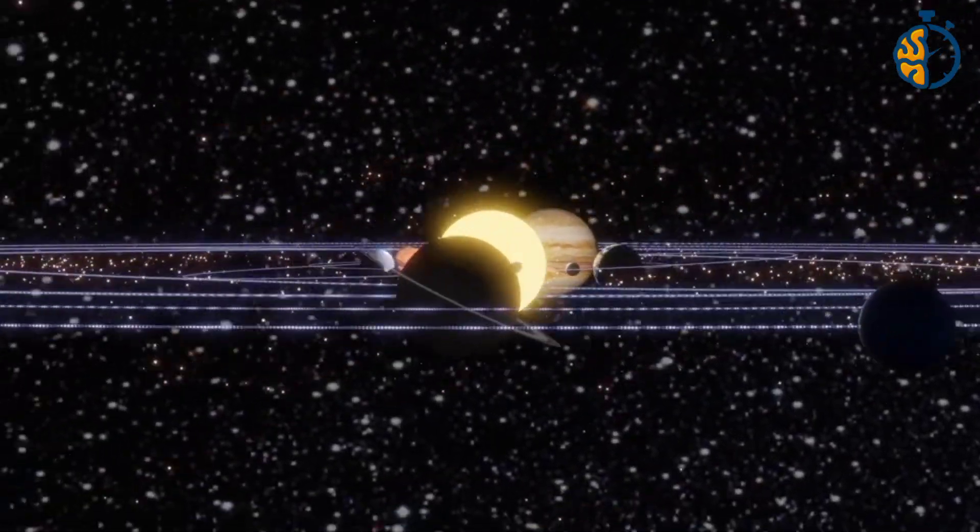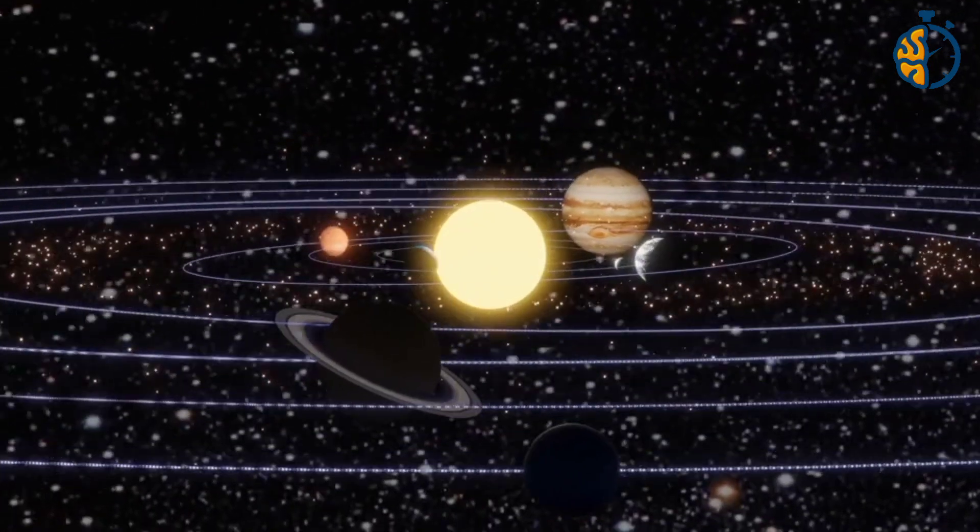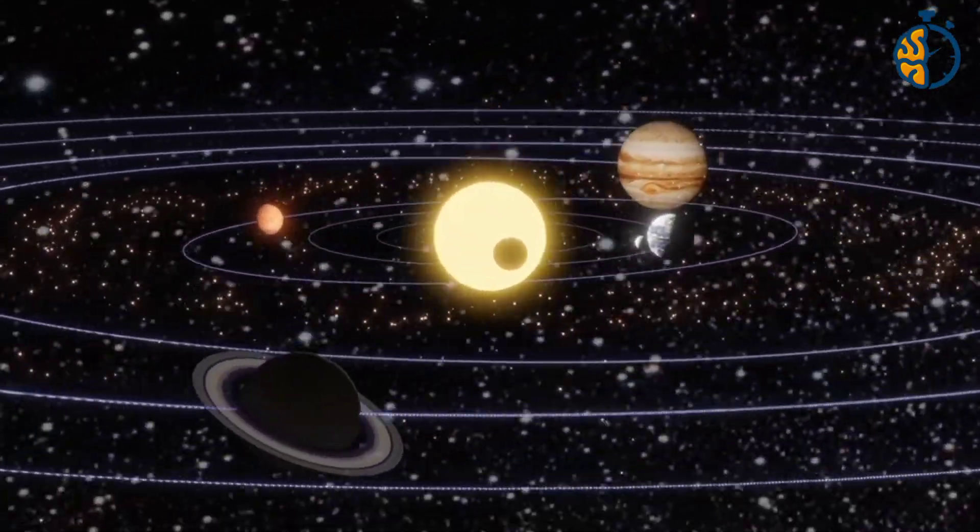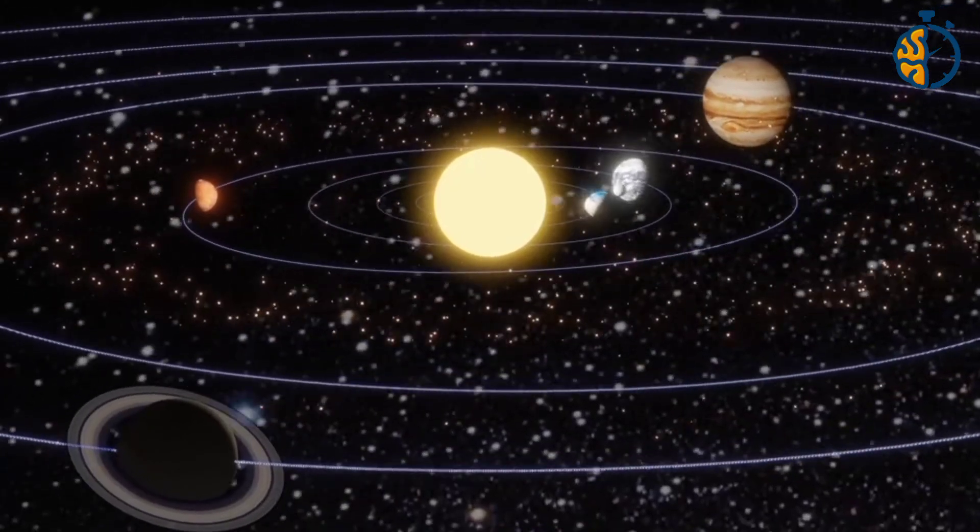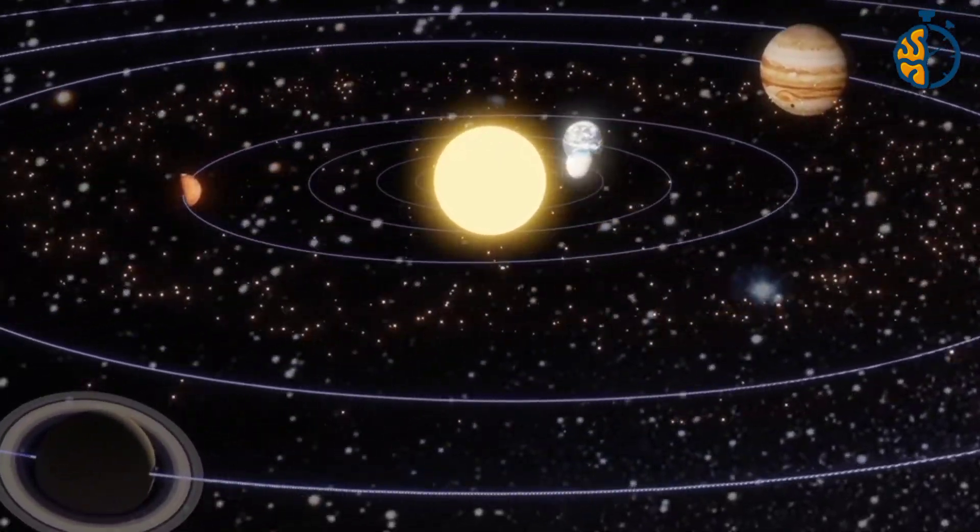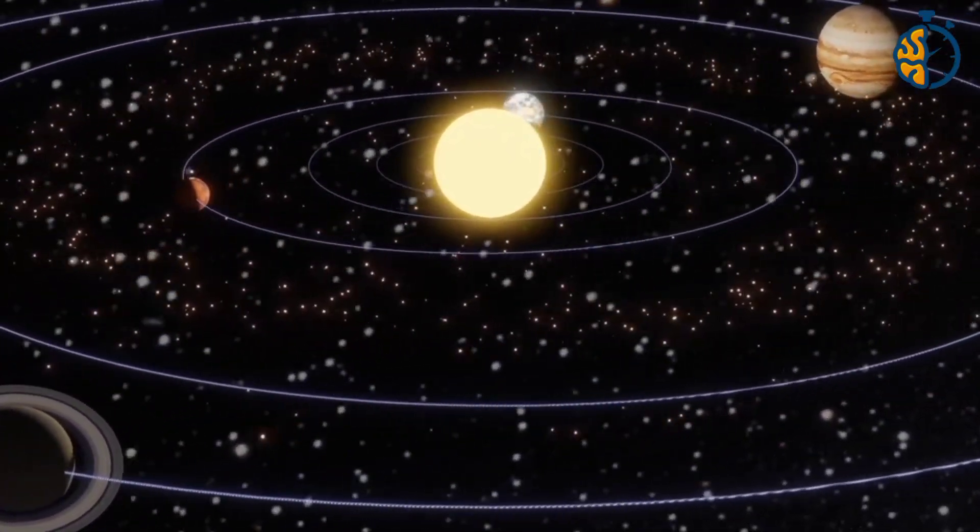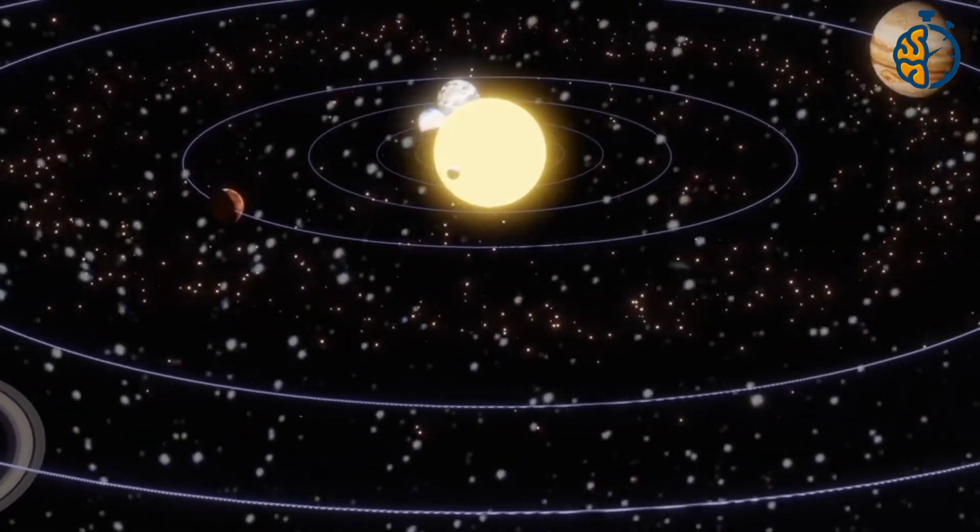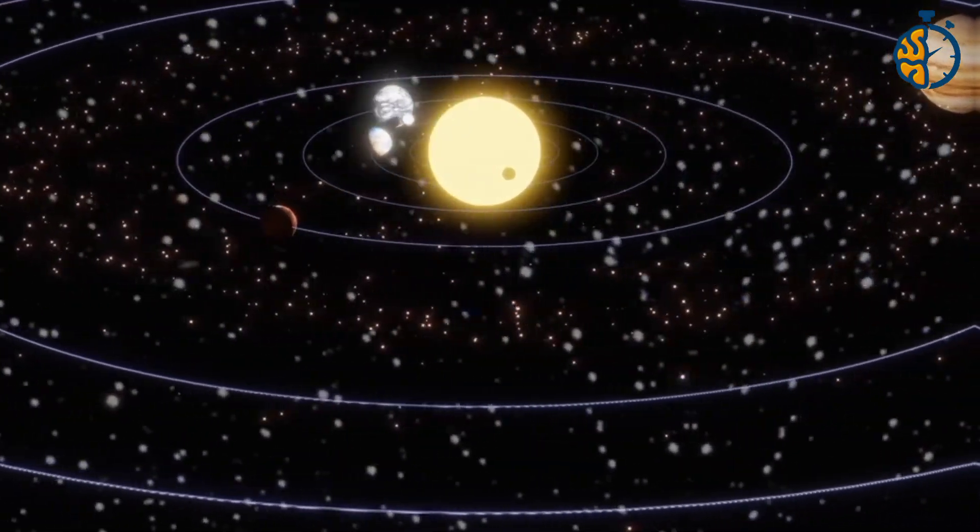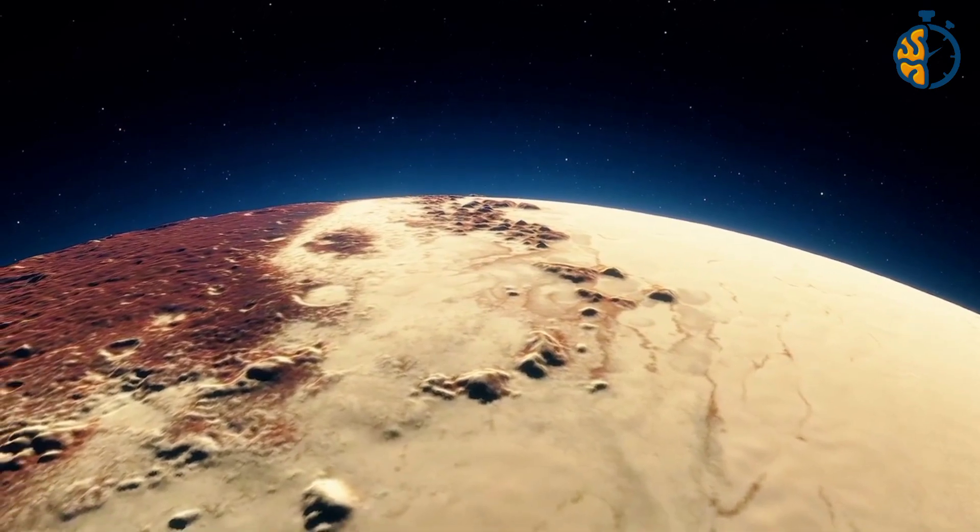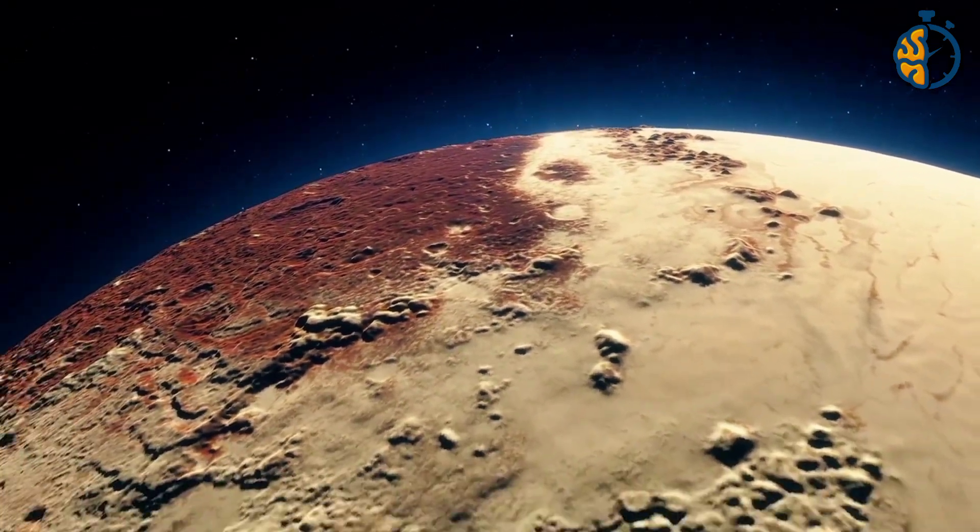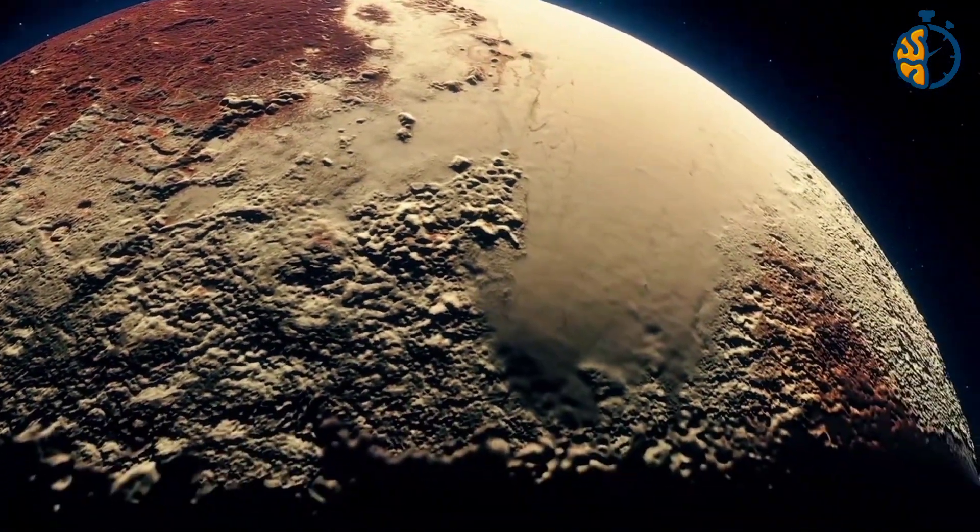Certain conditions were put in place to consider any particular body as a planet, namely, that it be in orbit around the sun, that its mass be sufficient for its gravity to overcome the forces of solid bodies so that it maintains an elliptical shape, and that it purifies the area adjacent to its orbit from other bodies. Pluto failed to fulfill the condition, because its mass is much less than the combined mass of the other bodies in its orbit.